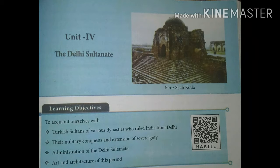In this lesson, the learning objectives are to know about the Turkish Sultanates of various dynasties who ruled India from Delhi, their military confluence and extensions of sovereignty, and the administrations of the Delhi Sultanates.